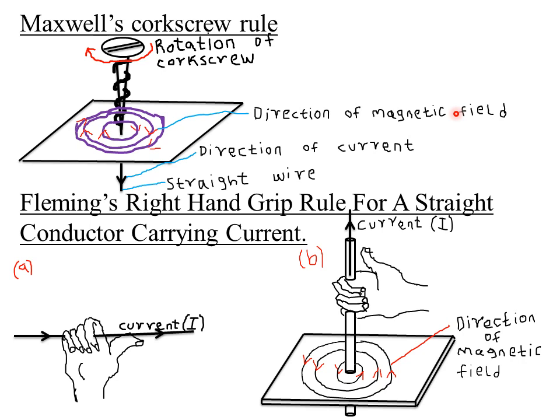So if the screw is rotating in the clockwise direction, then the field lines also rotate in the clockwise direction. The current is downwards in a straight wire, and that gives the direction of the magnetic field.